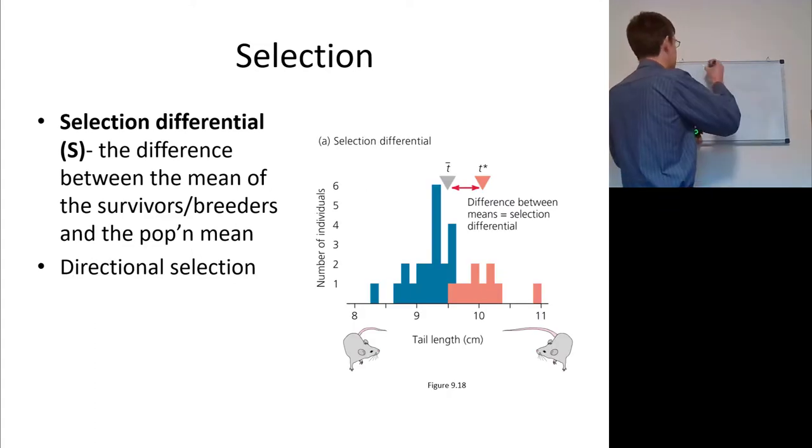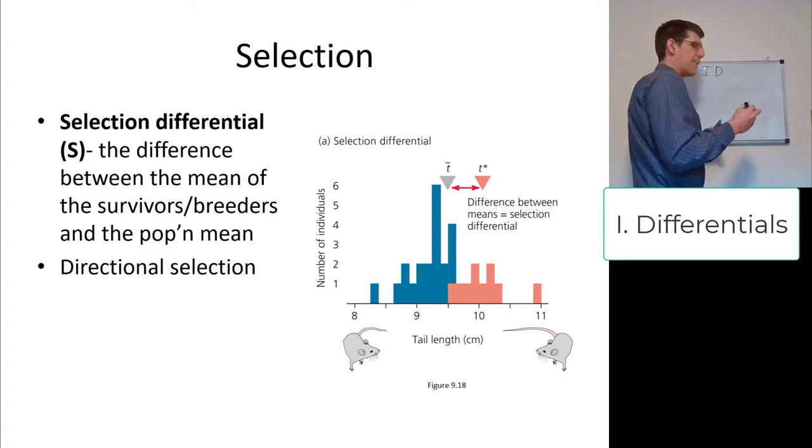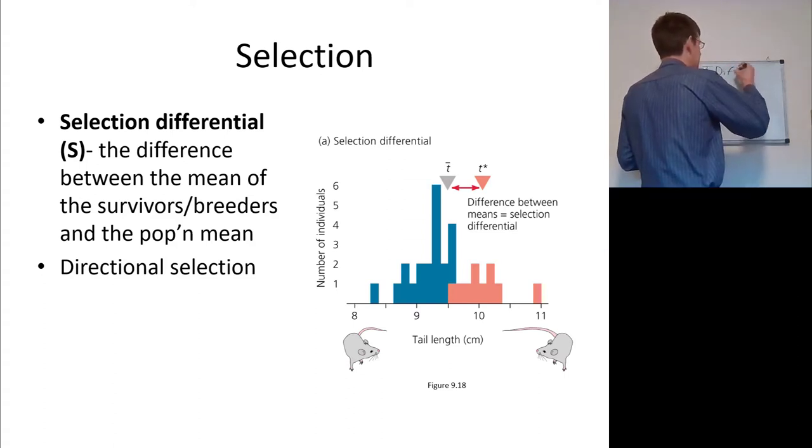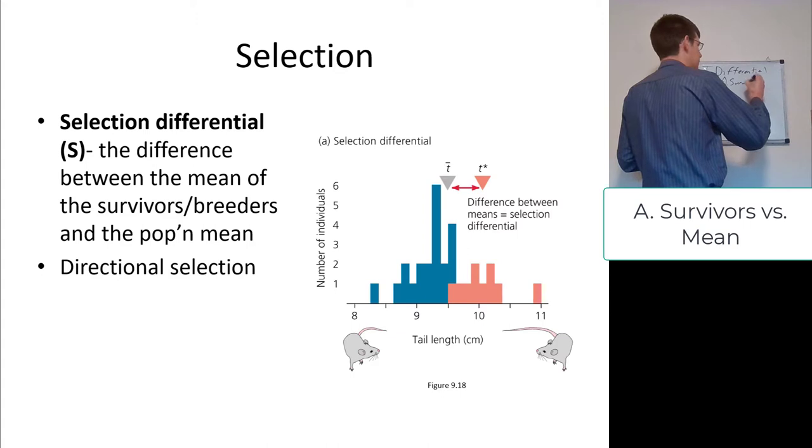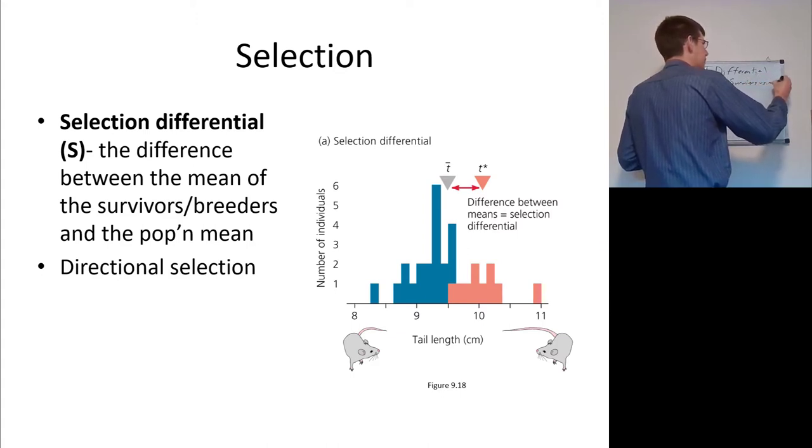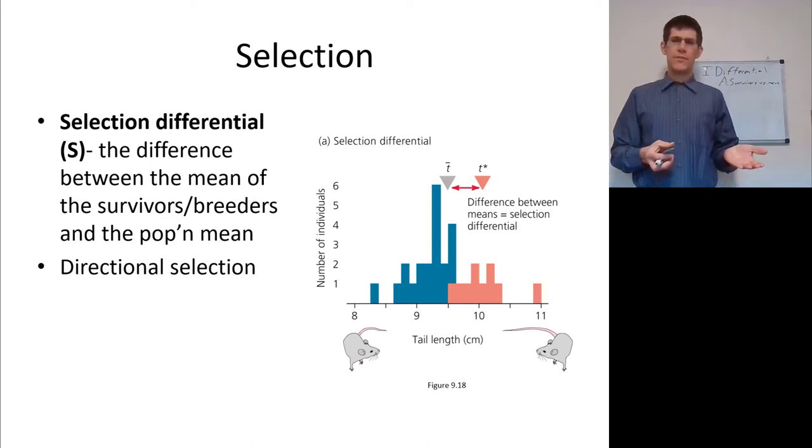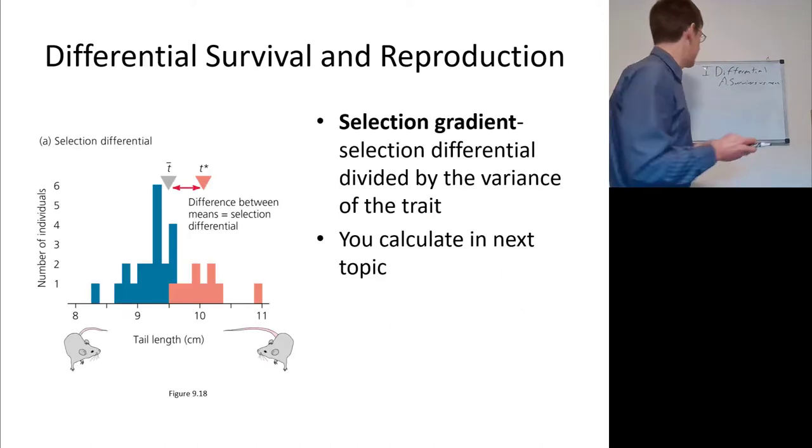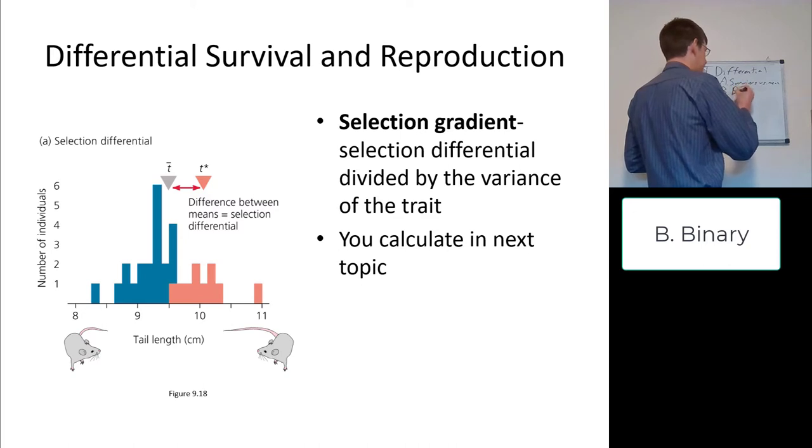Let's get started with selection differentials. This is the difference between your survivors, such as reproducers, and the mean. So the survivors versus the mean. If the survivors have higher reproduction than the mean reproduction, then it's a selection differential. Here we have different tail lengths. Certain mice have a longer tail and the ones that have a longer tail on average are reproducing at a higher rate, so they have a higher fitness. We're looking at the difference between the means of those that reproduced and those that did not reproduce. It's a binary choice.